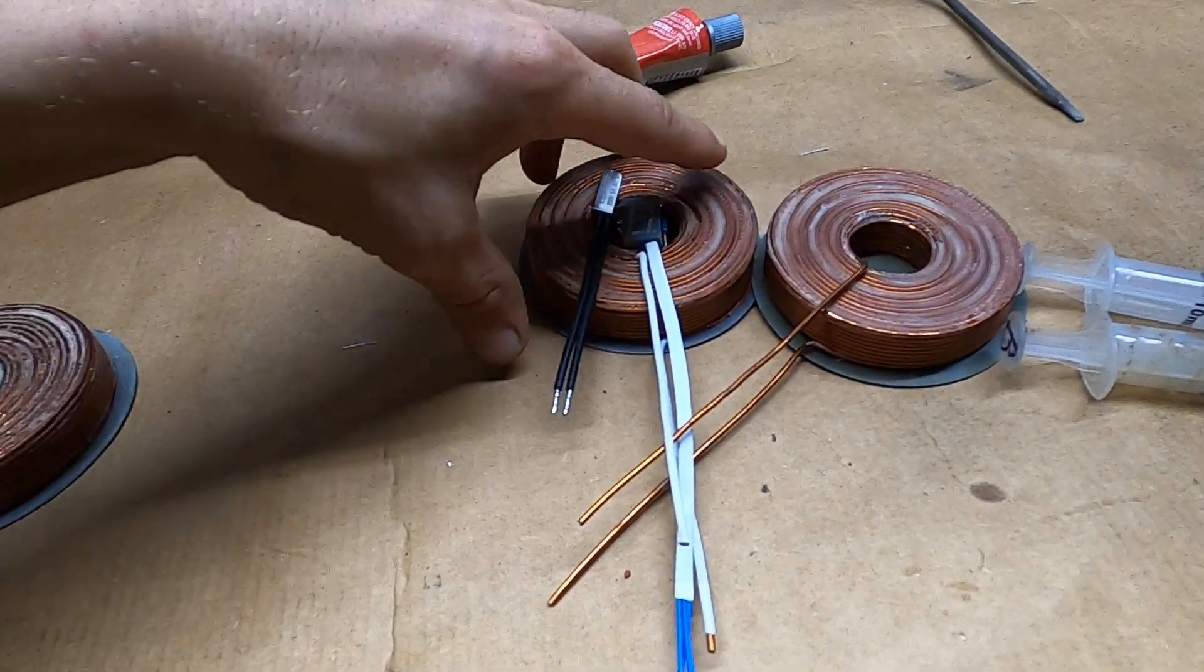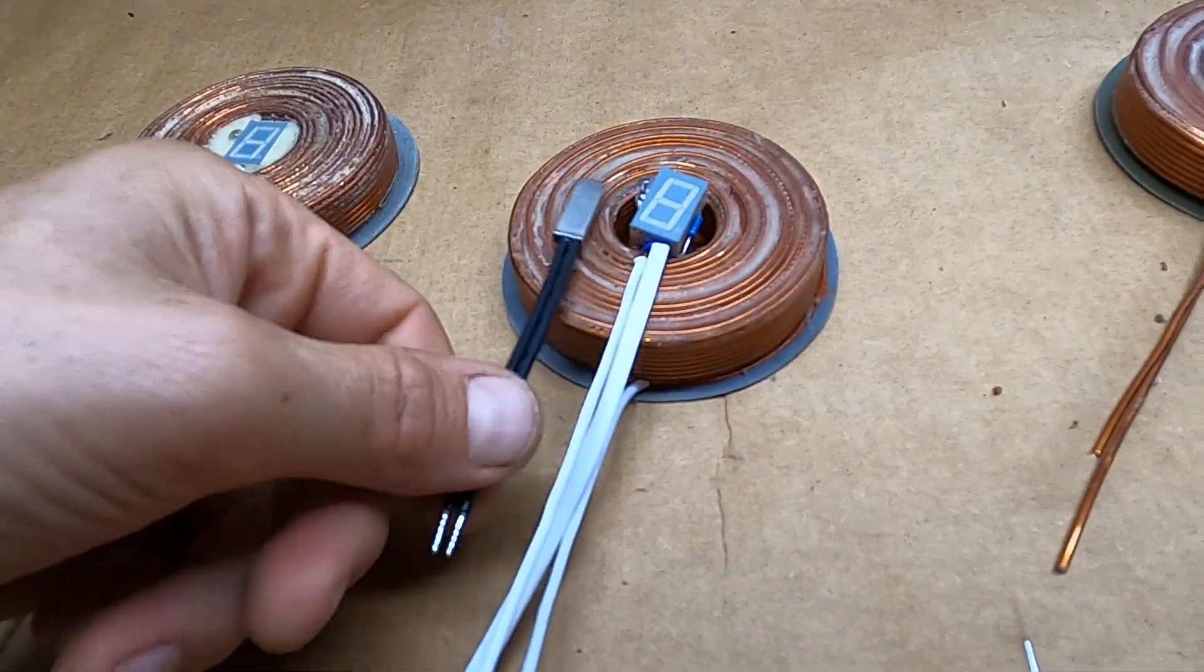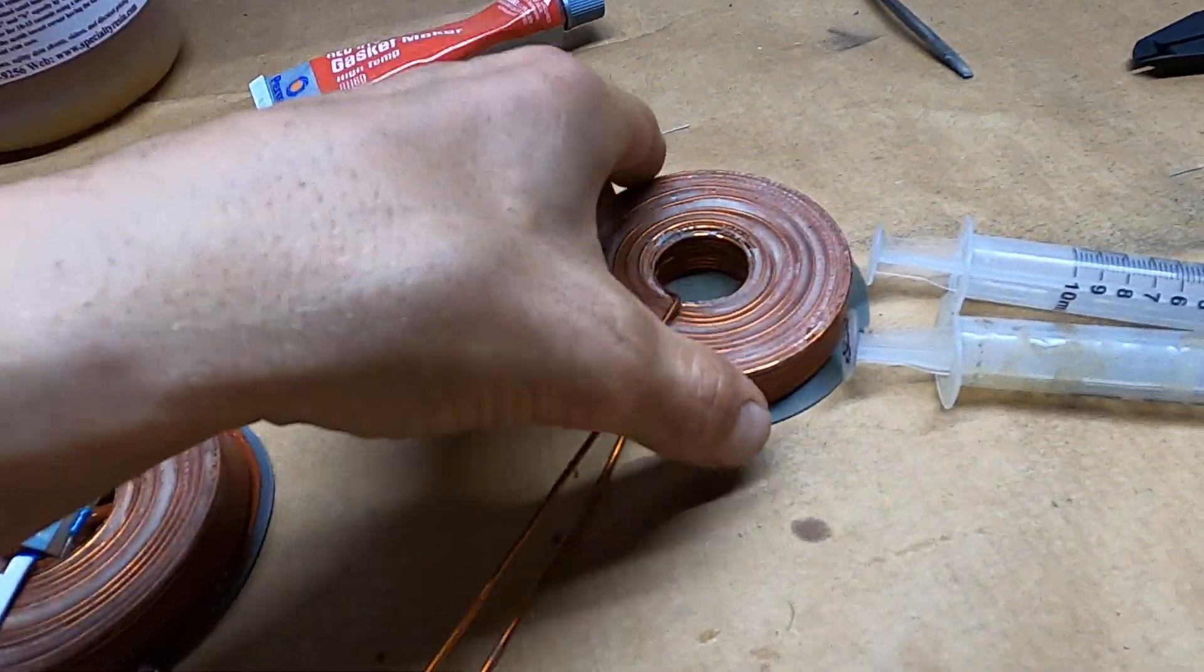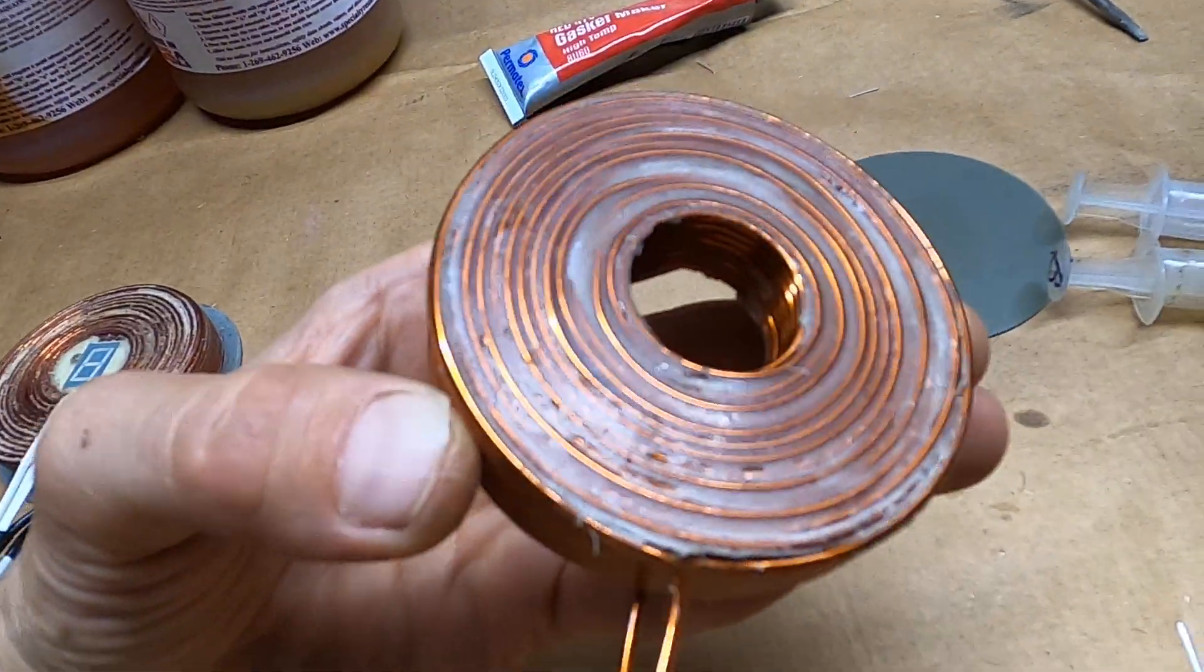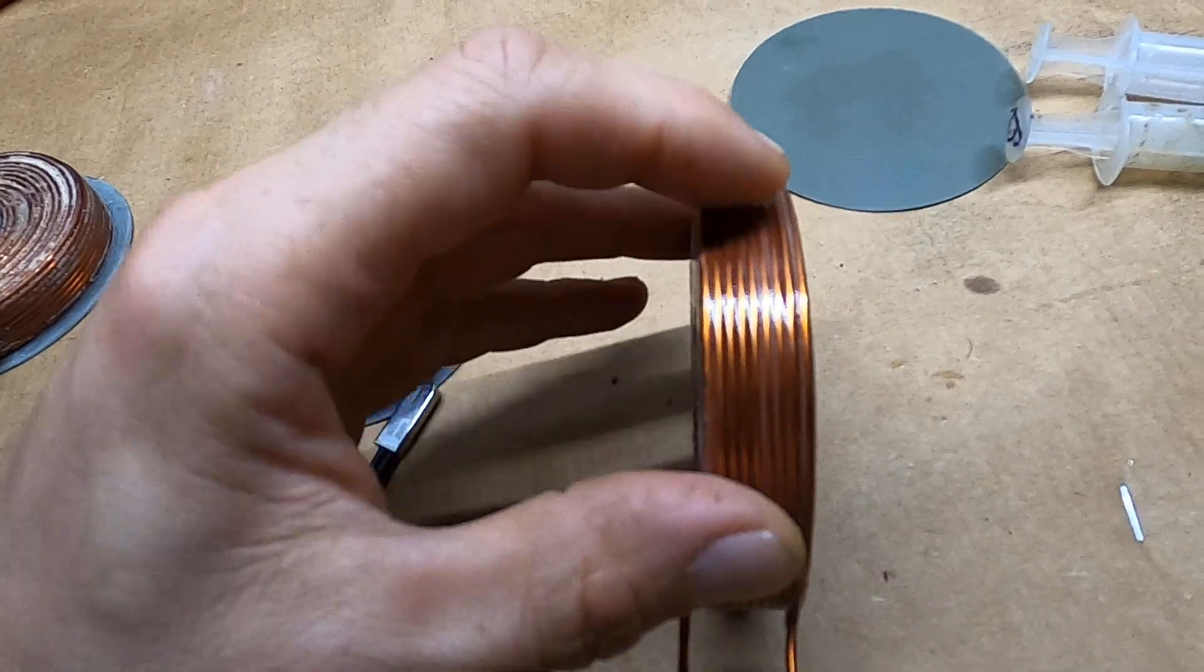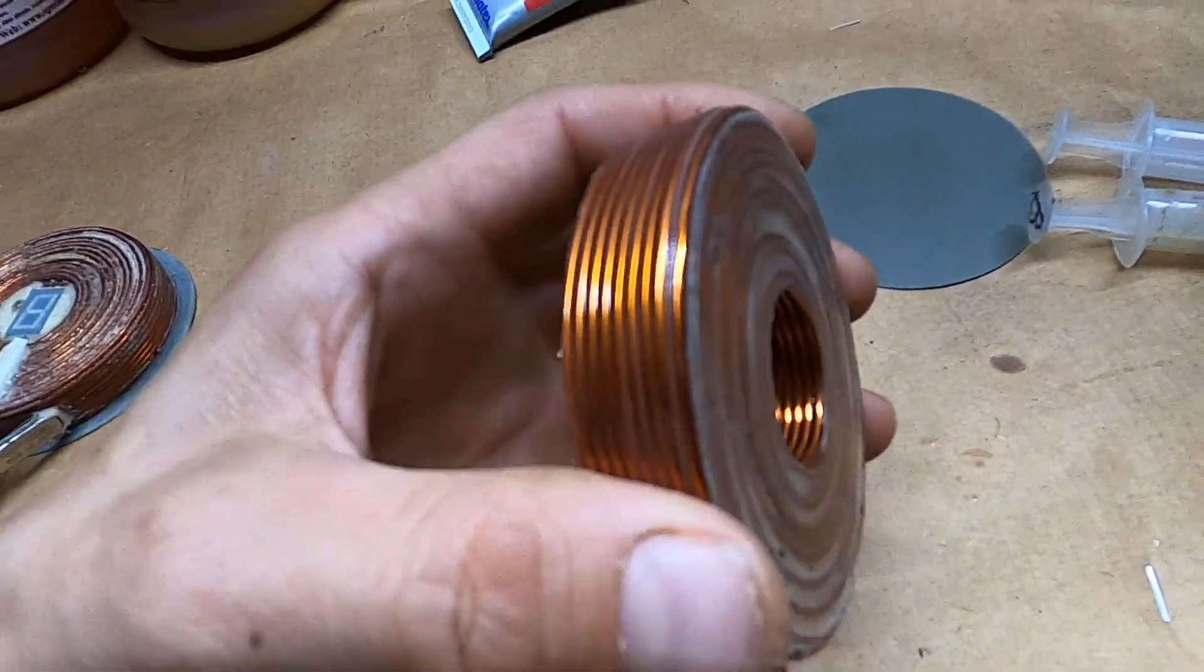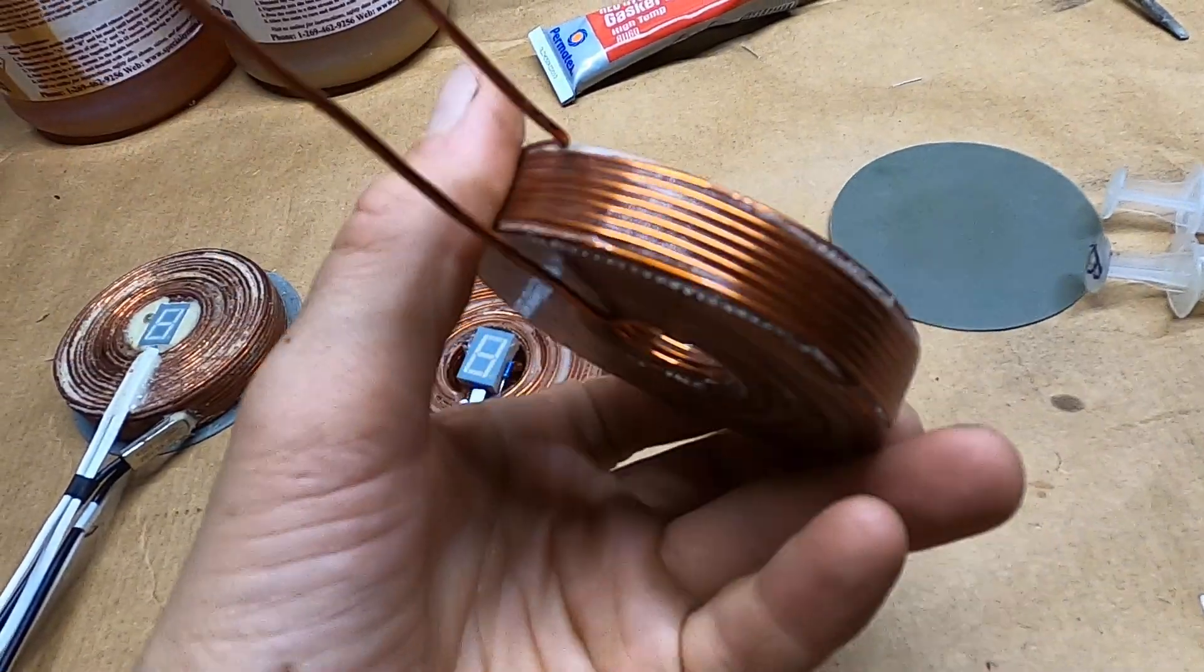Alright guys, hopefully this cleared out some of your questions on how I make these coils. Also the very last layer I added Flex at 90 here to hold it all together, the last layer.